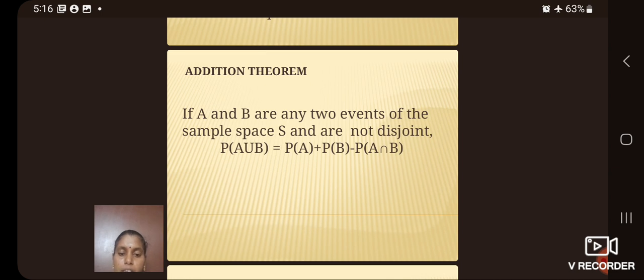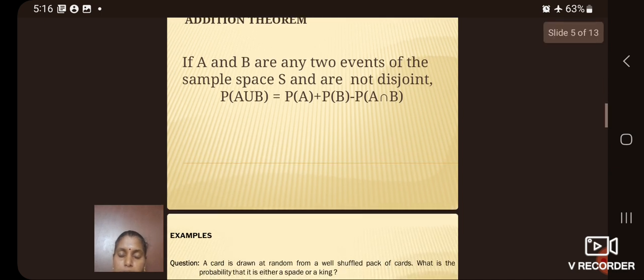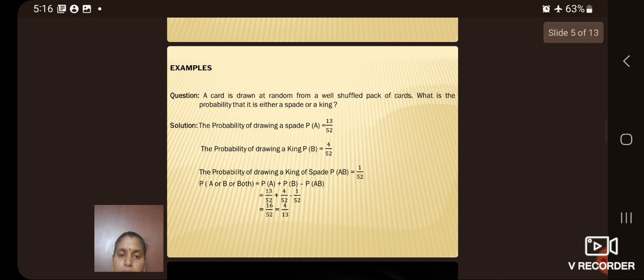Next, we see the addition theorem. Addition theorem is stated as if A and B are any two events of the sample space and are not disjoint, then P of A union B equal to P of A plus P of B minus P of A intersection B.